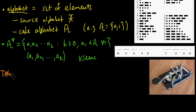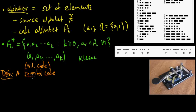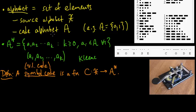Now we are ready for the definition. A symbol code — also called a variable length code — is just a function, which we'll denote by c, from X (our source alphabet) to A*, where A is our code alphabet and A* is the set of all finite-length sequences of elements of our code alphabet — the set of all strings from our code alphabet. So it just takes a source symbol and gives you a sequence, like it takes 'j' and gives you a sequence of zeros and ones, or dots and dashes.